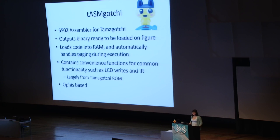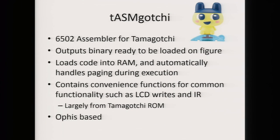So now I was ready to make my dev kit, and I made Tasmogotchi — the 6502 assembler for Tamagotchi. What it does is output a binary ready to be loaded on the figure, so you don't need to mess around with exploits. You just compile, load, and execute the code. It loads the code into RAM and then executes it. It contains a few convenience functions for things like writing to the LCD and IR, largely based on the Tamagotchi ROM, and it's based on a 6502 assembler for Python called Ophis.